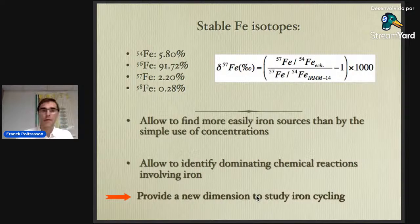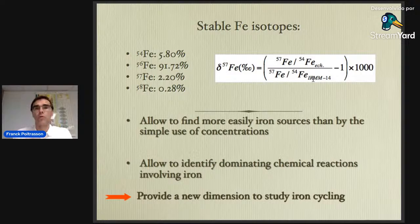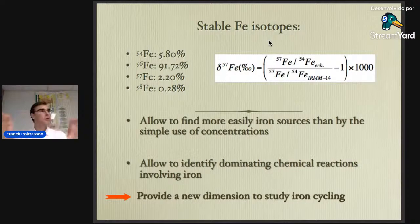Iron has four stable isotopes and we use the delta notation, similar to what we use for calcium isotopes. If you have a δ57Fe or δ54Fe ratio of your sample relative to that of the reference material, a positive value is heavy and a negative value is light. These isotope signatures allow us to find iron sources more easily than by simple concentration measurements, and they may also allow identification of dominant chemical reactions involving iron — such as redox reactions — where you have a good separation between reactants and products.